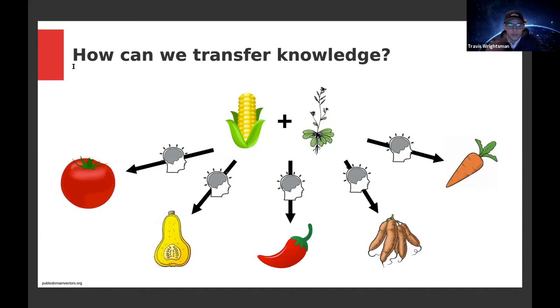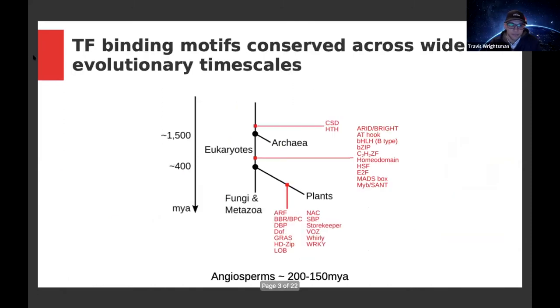One of the mechanisms we can use to facilitate this transfer of knowledge is by thinking of mechanisms that are conserved across long evolutionary timescales. One mechanism that's conserved across long evolutionary timescales is transcription factor binding. What I'm showing here is a very simplistic tree. In red I'm showing the emergence of new transcription factor families. There are a number of transcription factor families that predate the origin of plants, and also plant-specific transcription factor families that predate angiosperms. So we expect a lot of their binding motifs to be conserved in many of these plant species.